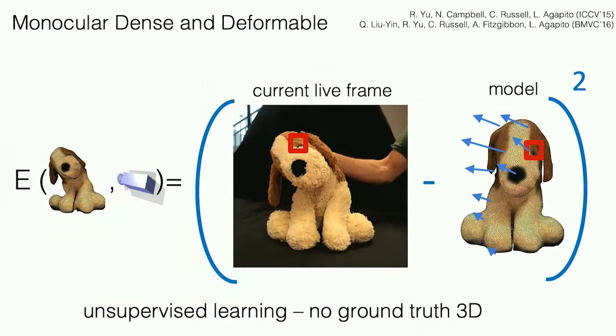For this, we're using model-based tracking techniques — an optimization approach where we have a current live frame, a model, and we're trying to minimize some photometric error. What we want is for matching pixels to have the same color. We use this loss function to find the new pose of the object. This is an unsupervised learning approach — we don't require ground truth three-dimensional measurements. We're matching 2D data, and this is the power of combining 3D models with unsupervised learning.